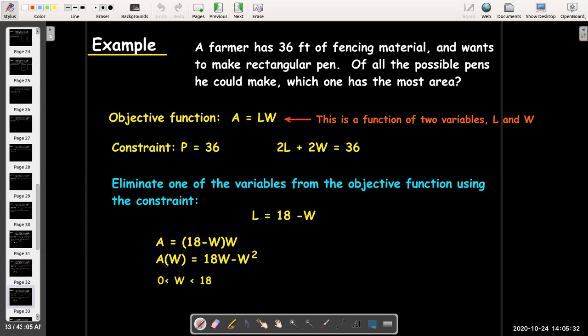And mathematically, I can't have W being smaller than 0 or bigger than 18. Otherwise, I would get a negative area. So, there's limitations on my choices of W.